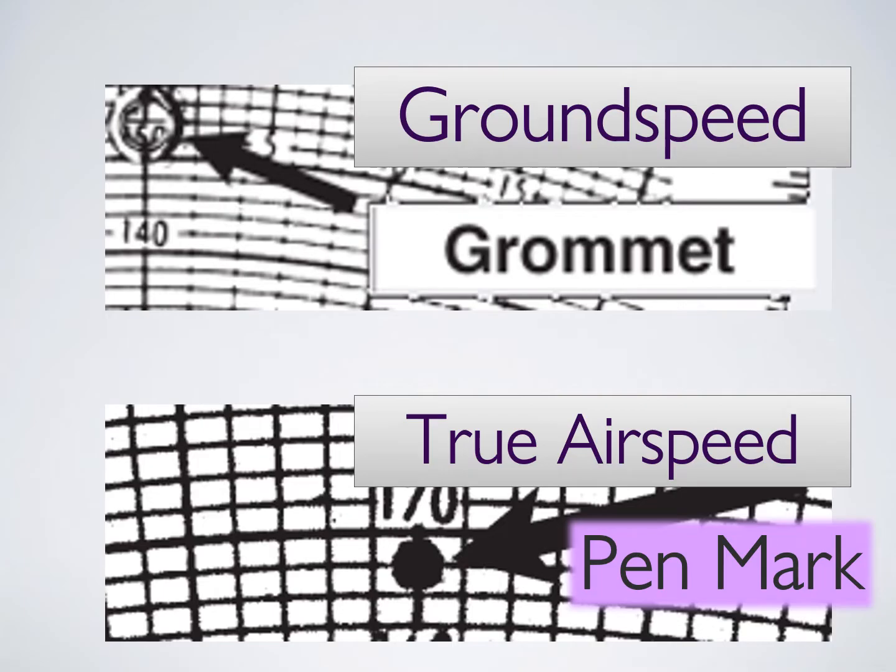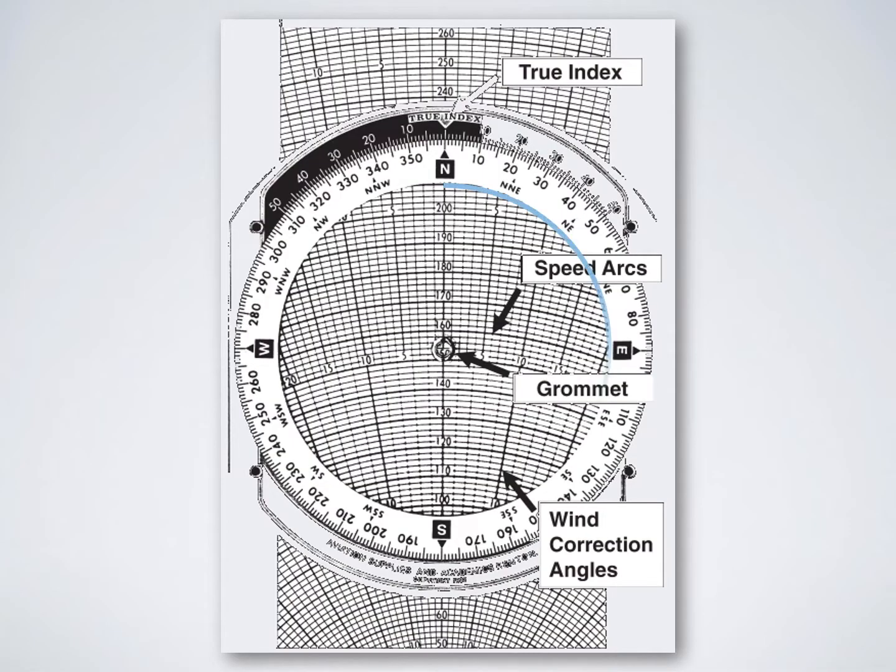If you take anything away from this video, it should be that the ground speed is represented by the grommet. If you remember that, it will make it much easier. Your true airspeed should always be the pen mark. Because of this design, you can actually measure wind really quickly in 360 degrees by measuring outwards from the grommet.